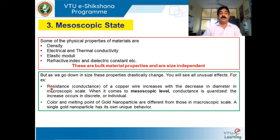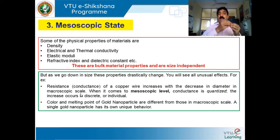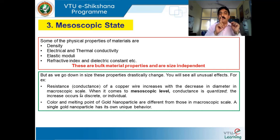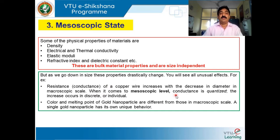This is a very surprising thing. We have not fully understood why this happens. There are some theories, and there is ample opportunity for research here. For example, resistance of a copper wire increases with decrease in diameter in the macroscopic scale — resistance is inversely proportional to area, directly proportional to length, and resistivity is constant. But when you go below 10 to the power minus 9, resistance and conductance become quantized — they change in a discrete manner, not progressively.